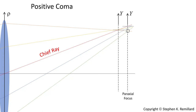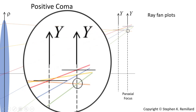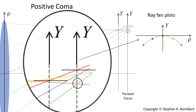To describe positive coma, consider a simple single thin lens. There are two coordinates: the coordinate on the entrance pupil, rho, and the coordinate on the image surface, y. Coma is readily observed in ray fan plots, generated by inspecting where rays pierce the image plane. The ray fan plot graphs image location versus pupil location, with the chief ray always taken as zero at the origin.